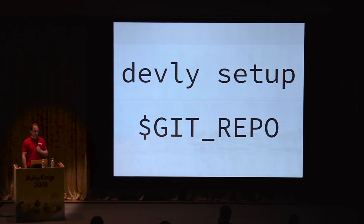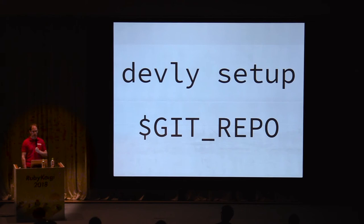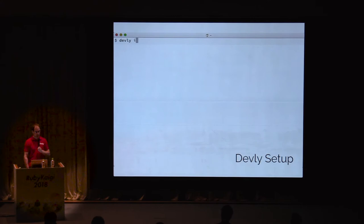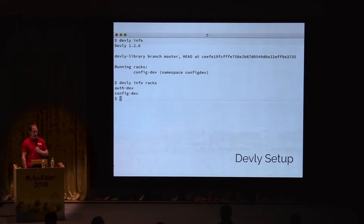We run devly setup and give Devly a Git repository to pull the Devly library from. This downloads the Devly library repository and other repositories for our services. Along with checking out repositories, setup performs some additional tasks, including checking your Docker version and your Google Cloud SDK version. The setup command will try to fix things that it can, or give you a message to help you fix it if it cannot. This step takes no more than a few minutes. Once setup completes, we can run devly info to see what racks and services are available to us.